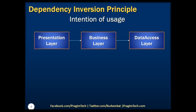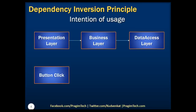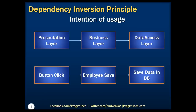From the illustrated diagram, higher-level modules depend directly on lower-level modules, and this does not follow the first point of the Dependency Inversion Principle. Let's take a look at a button-click event example from the Presentation layer that calls directly the Employee Save method of the Business Logic layer, which does some validation checks before saving the employee details to the database. This flow looks absolutely fine; however, we are coupling different layers as said earlier and any further changes are complicated and cumbersome.